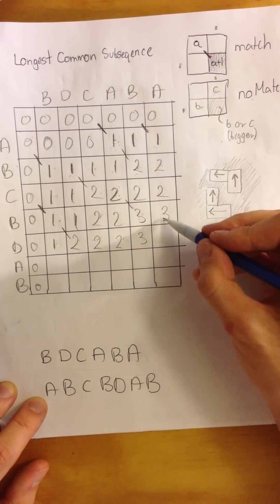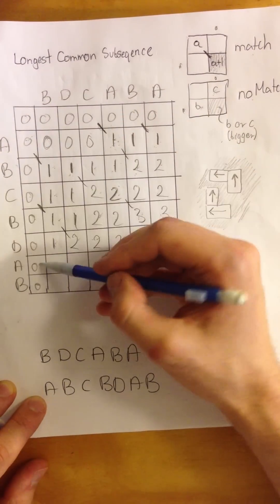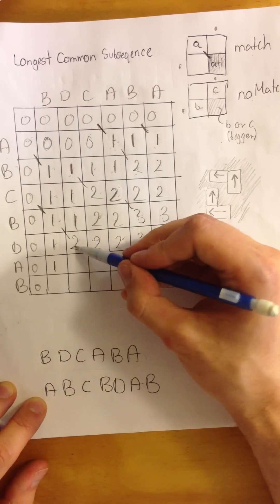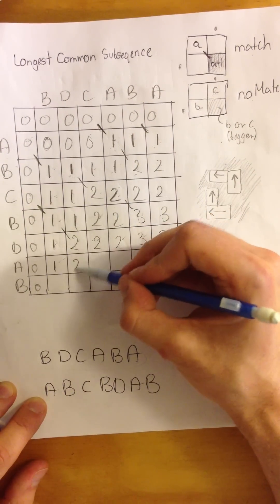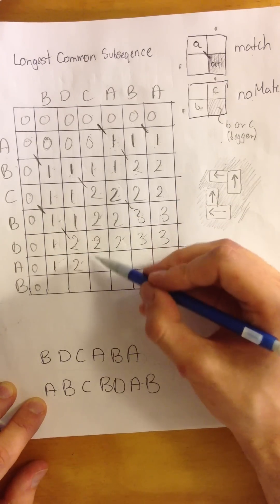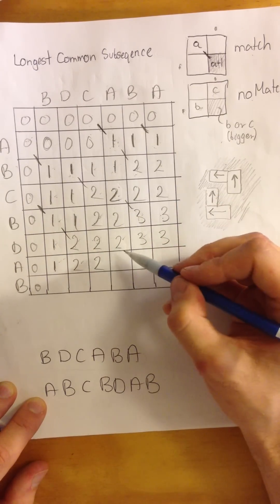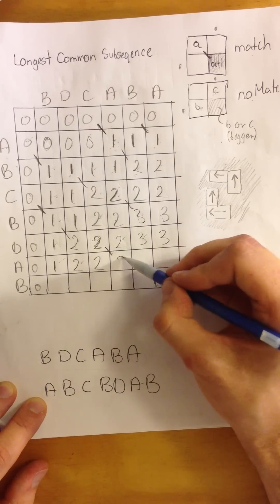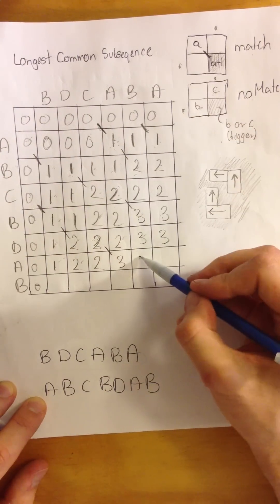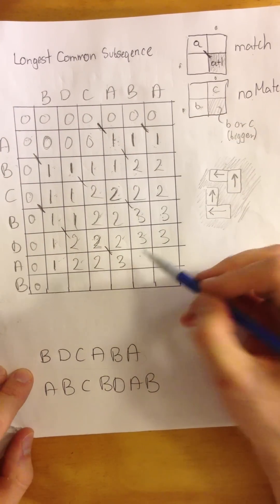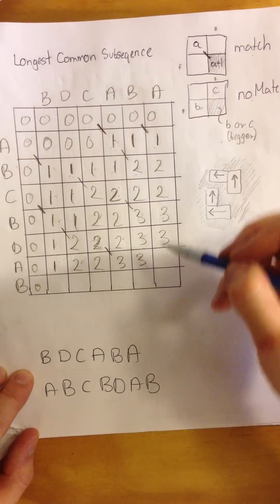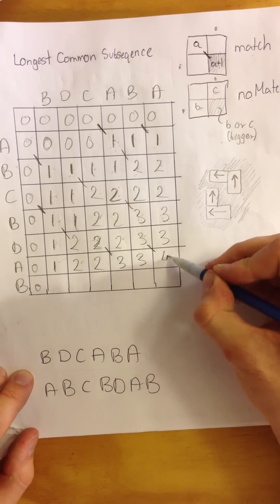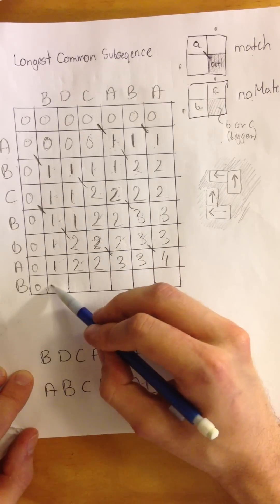No match, biggest value three. No match, biggest value three. No match, biggest value two. No match, biggest value two. A and A — we have a match, bridge, two plus one is three. B and A — no match, three. N and A — match, bridge, three plus one is four.